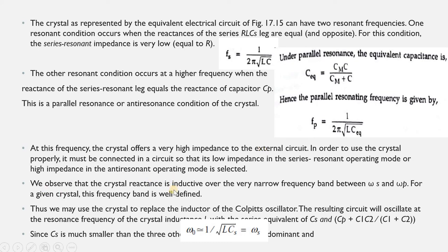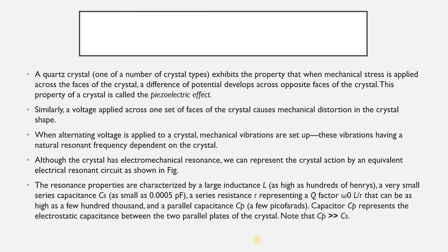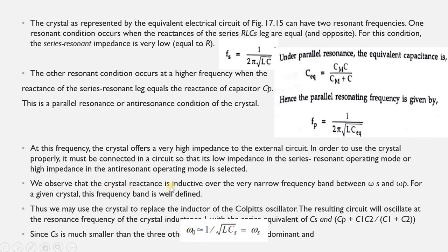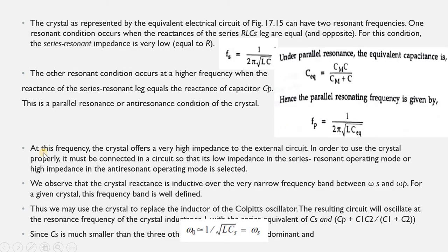The crystal reactance is inductive over a very narrow frequency band between ωs and ωp, as shown in the graph. Between ωs and ωp the curve is very narrow. For a given crystal this frequency band is well defined, thus we may use the crystal to replace the inductor of the Colpitts oscillator. Similar to the Colpitts oscillator, two capacitances and one inductance are connected in parallel — instead of the inductor, we use the crystal, which is the only difference.